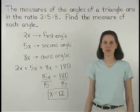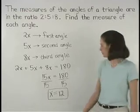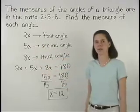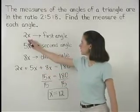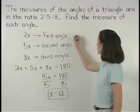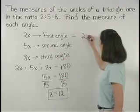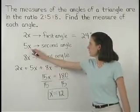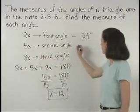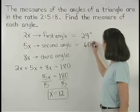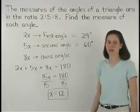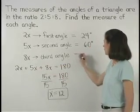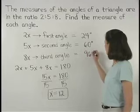Now, to find the measures of each of our angles, we simply plug 12 back in for x. So our first angle, 2x, measures 2 times 12, or 24 degrees. Our second angle, 5x, measures 5 times 12, or 60 degrees. And our third angle, 8x, measures 8 times 12, or 96 degrees.